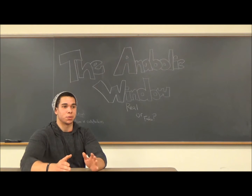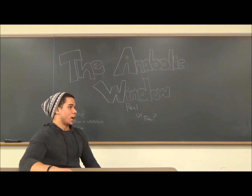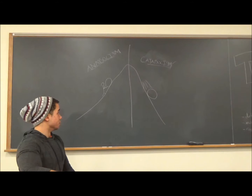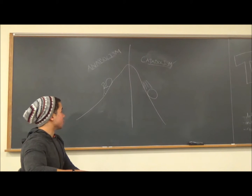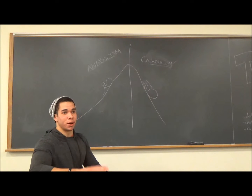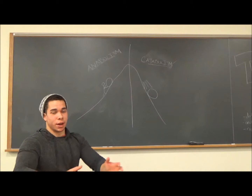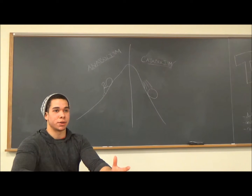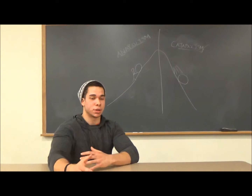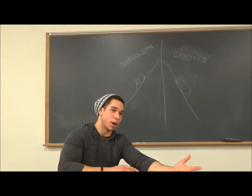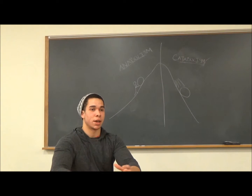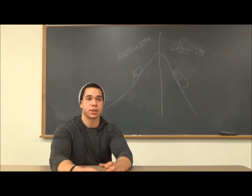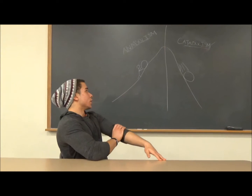To further define what the anabolic window is, we're going to talk about what anabolism versus catabolism is. Catabolism is the process of when your body breaks down food, and it's going to happen every time you consume food. Your body breaks it down — proteins into amino acids to be used in your body, carbohydrates down into their simplest form like sugars, which it uses to make ATP. It also breaks down fats into fatty acids, which are also a source of energy in the body.